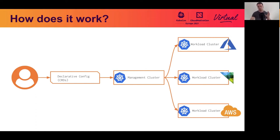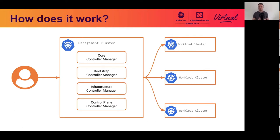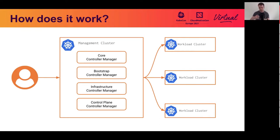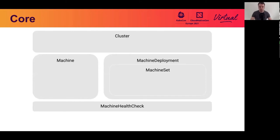Looking inside the management cluster, Cluster API defines four major controller managers which handle CRs, their reconciliation, and the lifecycle creation of workload clusters. These four are the core controller manager, the bootstrap controller manager, the infrastructure controller manager, and the control plane controller manager. Each block in the diagram represents one CRD reconciled by its corresponding controller inside these managers.